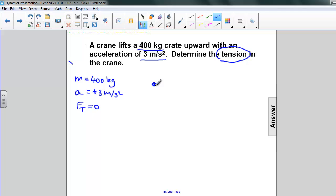Draw a free body diagram. The crate is the object being lifted, and it has a mass and therefore a weight pulling down, and an upward force of tension from the crane.